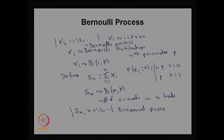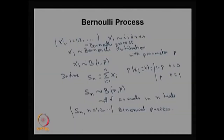Sn is defined as the sum of the first n random variables, and each Sn follows a binomial distribution with parameters n and p. The sequence {Sn, n = 1, 2, 3, ...} is a binomial process. Since we are collecting arrivals over discrete time steps 1, 2, and so on, this is a discrete time arrival process. Similarly, we will explain the continuous time arrival process, whereas the binomial process here is a discrete time arrival process.